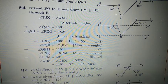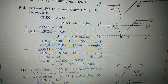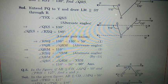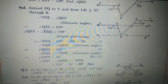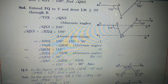Angle QRM is an alternate interior angle with angle PQR, so angle QRM equals 110 degrees. Now with this 50 degrees, the total is 110. From this 110, subtract 50, then you get 60 degrees.